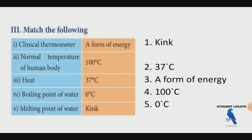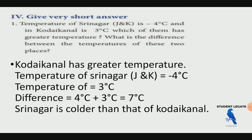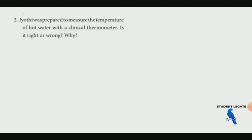The temperature of Srinagar is minus 4 degrees Celsius and the temperature of Kodaikanal is 3 degrees Celsius. Which has the greater temperature? Kodaikanal is higher. The difference between the temperatures of the two places is 3 minus (minus 4) = 3 plus 4 = 7 degrees Celsius.